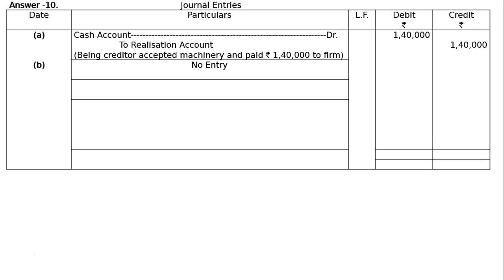Similarly, in Part C: A third creditor of Rs.90,000 accepted Rs.45,000 in cash and investments worth Rs.43,000 in full settlement of his claim. Again, no journal entry is required for this transaction.